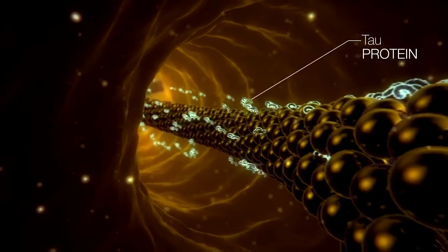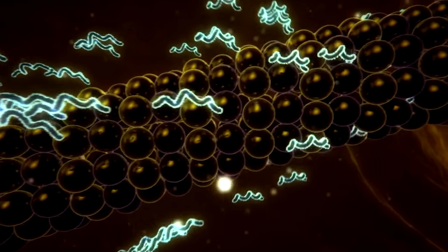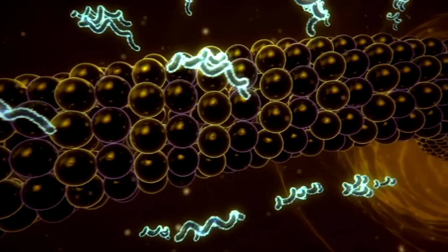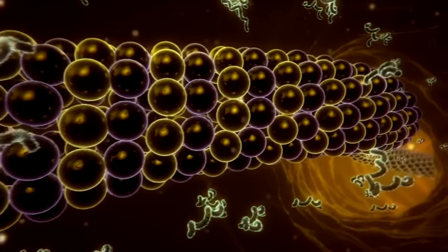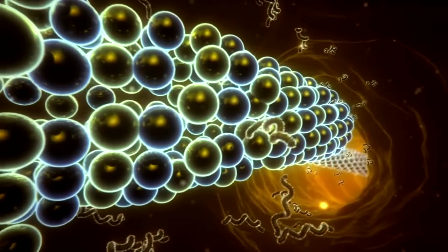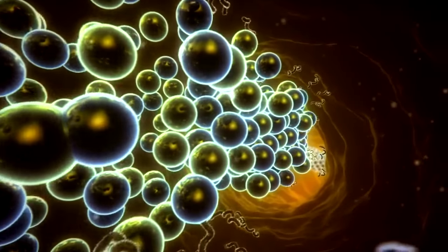In Alzheimer's disease, tau protein becomes defective and detaches from the microtubules. Thus, the skeleton of the neuron dissociates as it is no longer maintained.